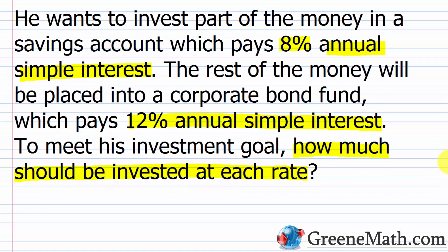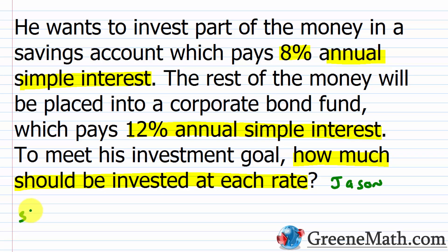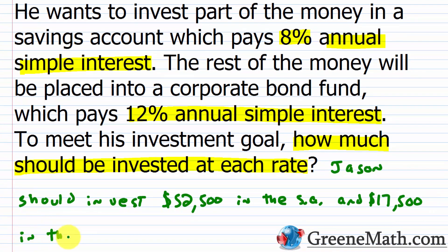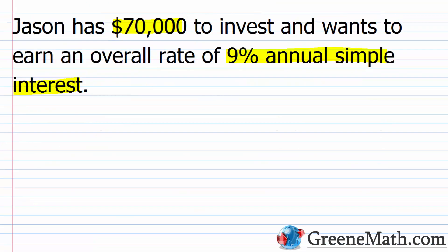In terms of the question asked: Jason should invest $52,500 in the savings account and $17,500 in the bond fund. To check: 52,500 plus 17,500 equals $70,000 — that confirms the total is correct.